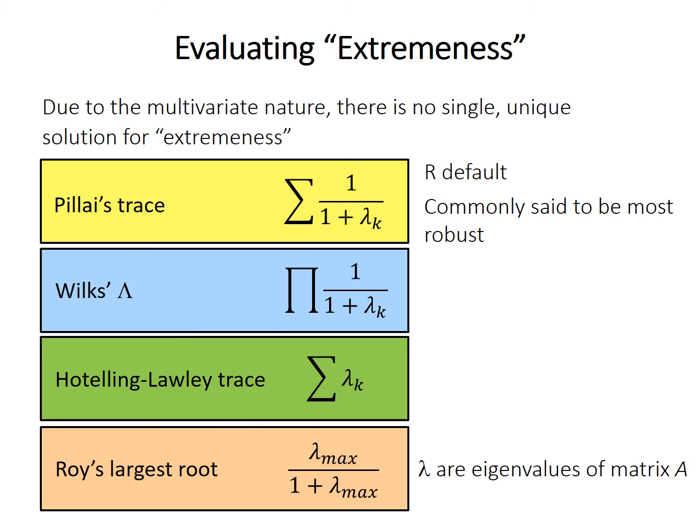All of these values — Pillai's trace, Wilkes' lambda, or whichever you choose — are converted to an approximate F value because of the multivariate nature, and then tested for significance against the F distribution.